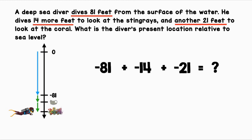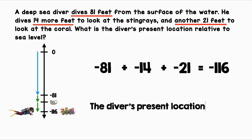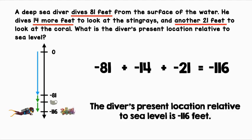First, let's find the sum of the absolute values: 81 plus 14 plus 21 equals 116. Next, let's look at the original expression and use the same sign: negative 116. The diver's present location relative to sea level is negative 116 feet.